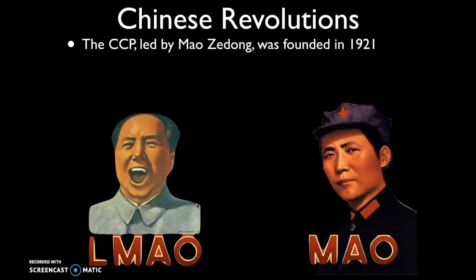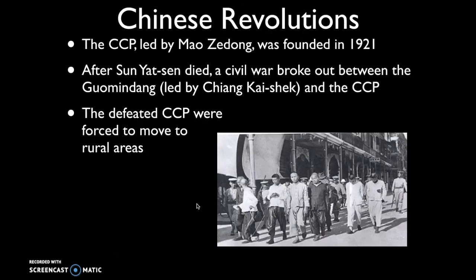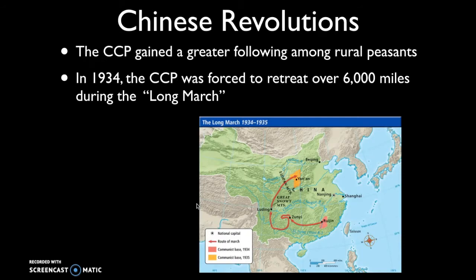After Sun Yat-sen died, a civil war breaks out in China between the Guomindang — this time led by Chiang Kai-shek — and the Chinese Communist Party. The Guomindang prevail, the CCP are defeated. But this is kind of a blessing in disguise for the CCP, because they are forced to retreat to the more rural parts of China. This is where the CCP gains their base of support and strength, building a following amongst rural peasants.